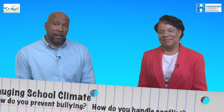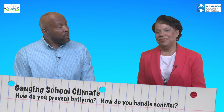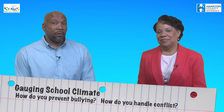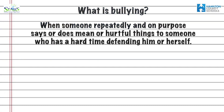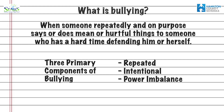Two factors that can gauge your school climate are how you prevent bullying and how you handle conflict. Bullying is defined when someone repeatedly and on purpose says or does mean or hurtful things to someone who has a hard time defending him or herself. The three primary components being repeated, intentional, and a power imbalance — the intended target has a hard time defending him or herself.